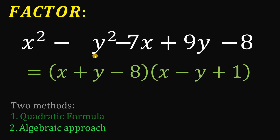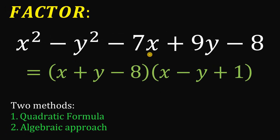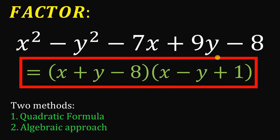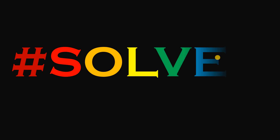Rearranging the terms gives the factored form of x squared minus y squared minus 7x plus 9y minus 8. And as always, we are done.